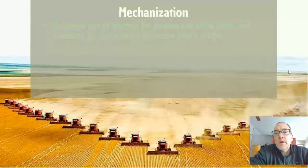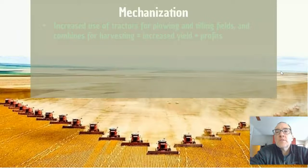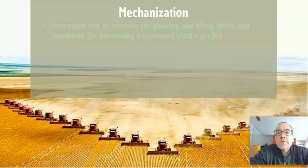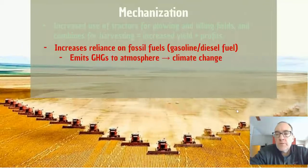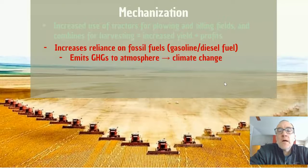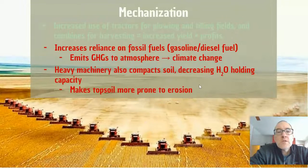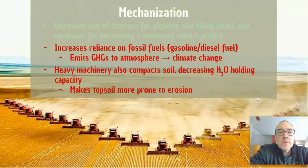Paramount to this system is mechanization — using tractors for plowing and tilling fields, and combines for harvest. Making more efficient machines to harvest increases our reliance on fossil fuels; gasoline and diesel fuel emit a lot of greenhouse gases and contribute to climate change. Heavy machinery can also compact the soil, increase water capacity issues at depth, and be detrimental to topsoil.